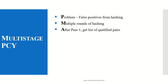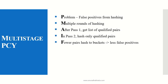After pass 1, we get a list of qualified pairs. Qualified pairs means: if the support is less than the given minimum support, those item sets are rejected; those with support equal to or greater than the threshold are accepted. In pass 2, we hash only the qualified pairs — rejected items and rejected pairs are removed. Fewer pairs hashing to buckets means less false positives, meaning the incorrect results we might mistakenly accept are reduced.